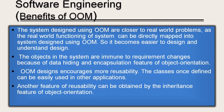What are the benefits of object-oriented modeling? Systems designed using OOM are closer to real-world problems, as the real-world functioning of the system can be directly mapped into system design using OOM, making it easier to design and understand. Objects in the system are immune to requirement changes because of data-hiding and encapsulation. OOM designs encourage more reusability — classes once defined can be easily used in other applications, and reusability can also be obtained through inheritance.